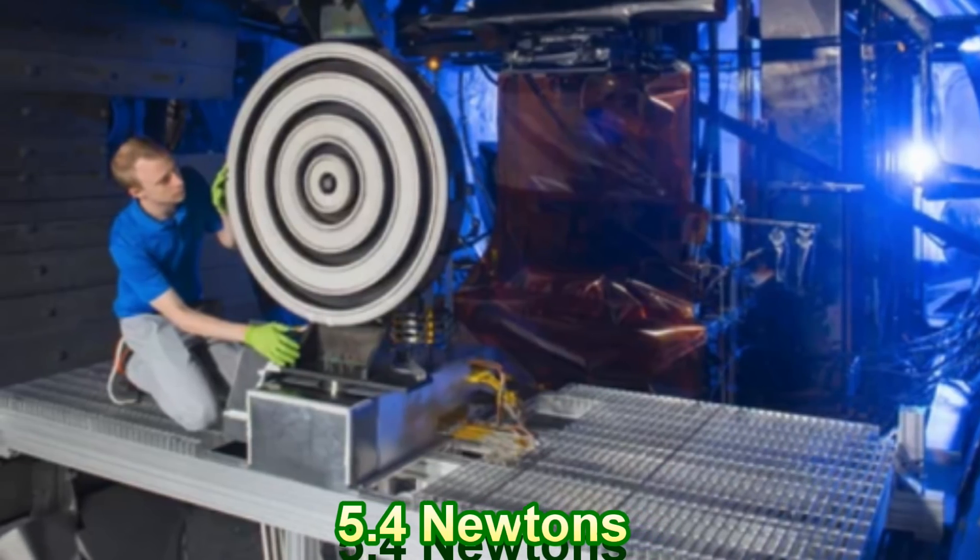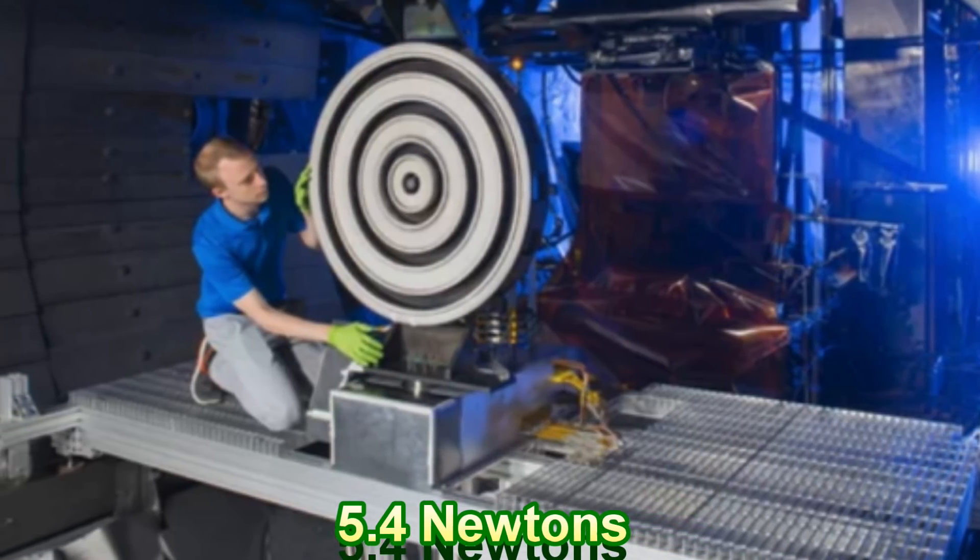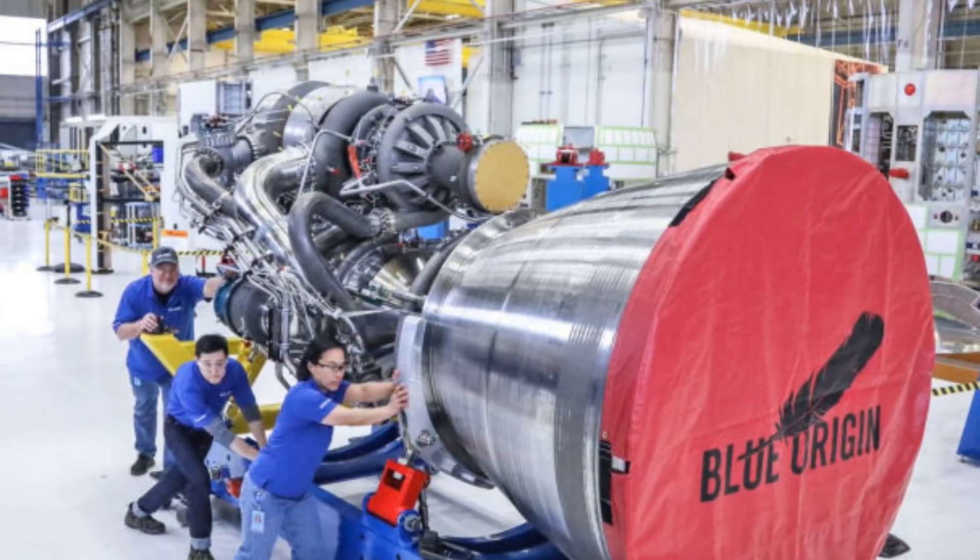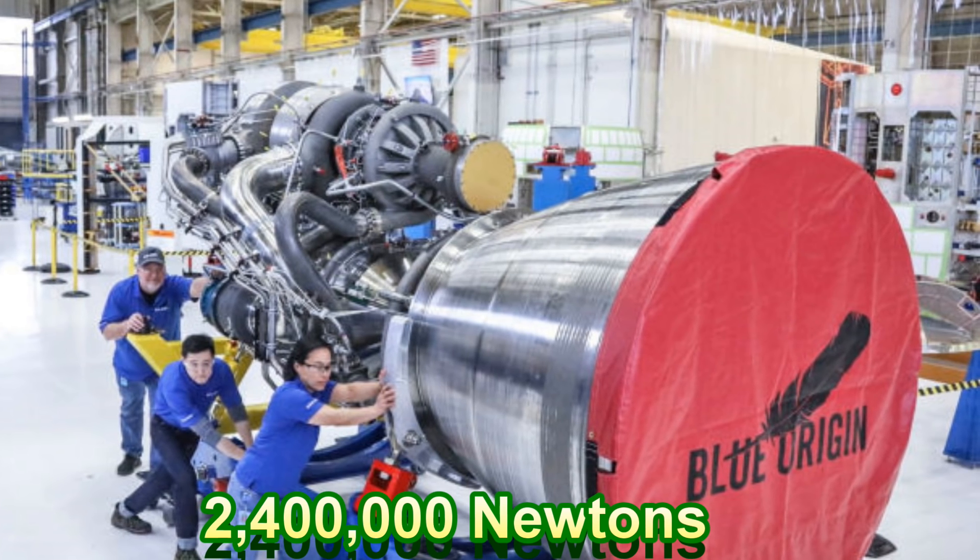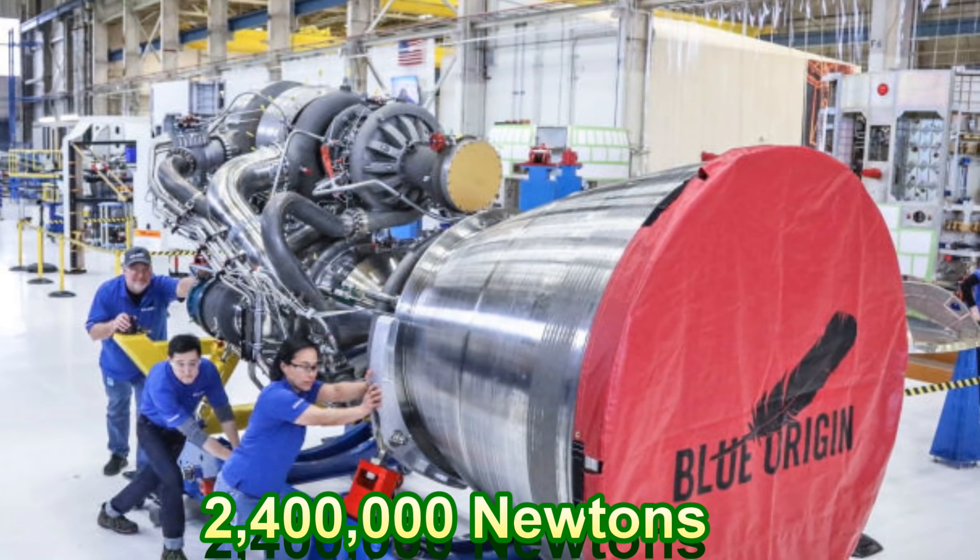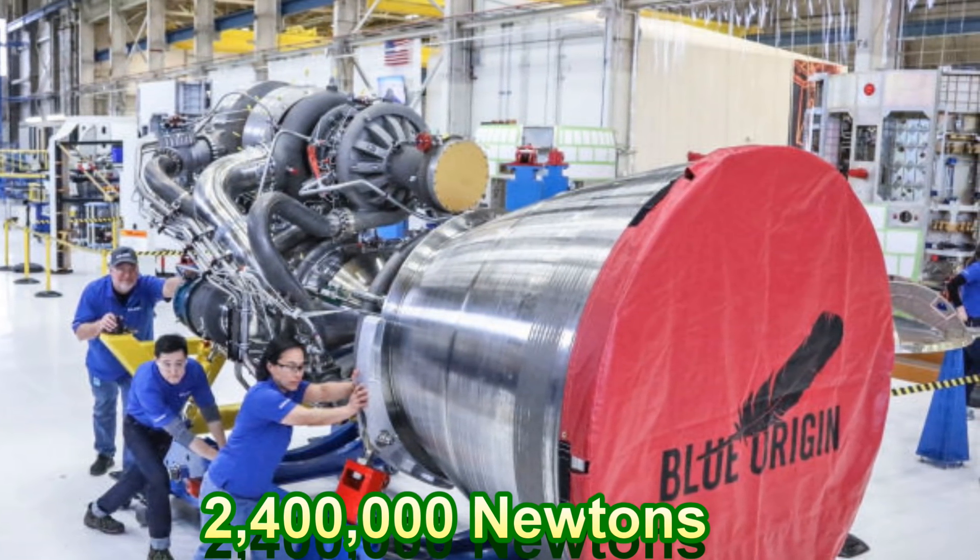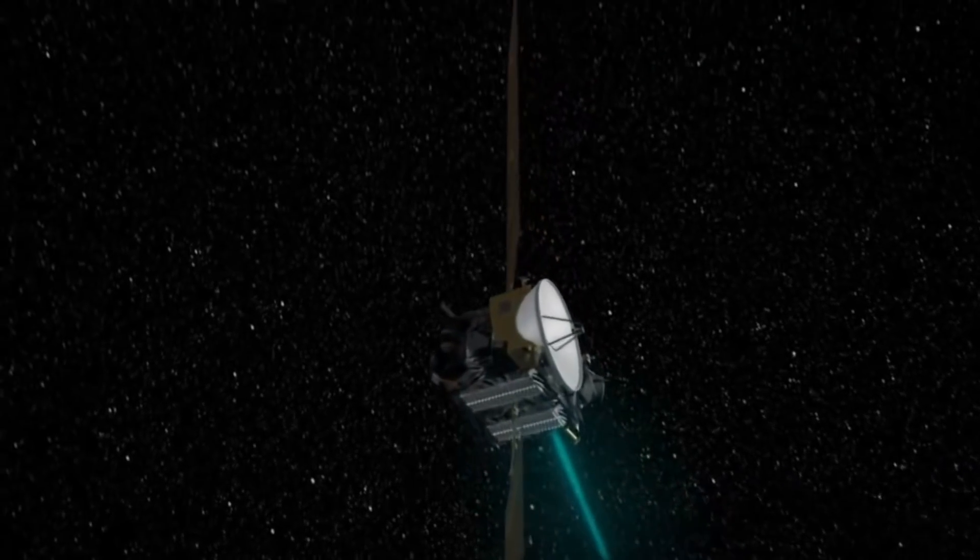Compared to the X3 ion thruster with 5.4 Newtons of thrust, Blue Origin's BE-4 engine currently in development will have 2.4 million Newtons or 550,000 pounds of thrust. Not only is the thrust weak for ion propulsion, it accelerates very slowly.